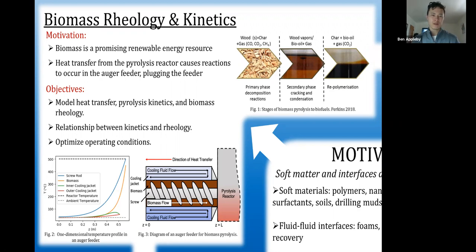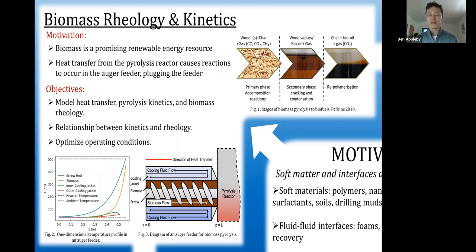Biomass feedstock plays a large role in biomass fuel yields, with the idea that higher concentrations of biomass are ideal because they have high energy densities for processing. At the same time, at those higher biomass concentrations it becomes far more challenging to process and move about at an industrial scale. The working hypothesis is that heat transfer from the pyrolysis reactor causes preliminary decomposition reactions in the feeder as shown by the red arrow in figure three. This reaction changes the rheology of the biomass causing it to be sticky.